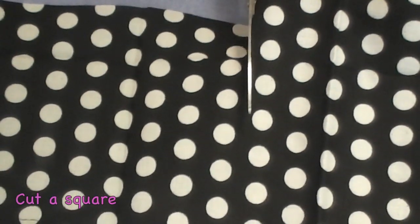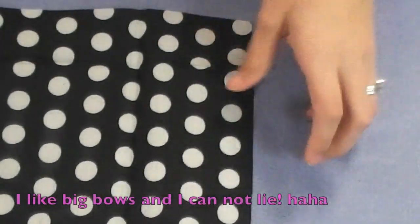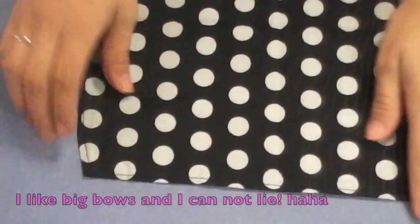The first thing that you want to do is pick out your fabric and cut a nice square. The bigger the square, the bigger the bow. The smaller, the smaller the bow.